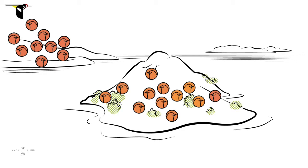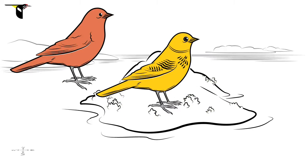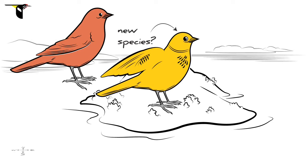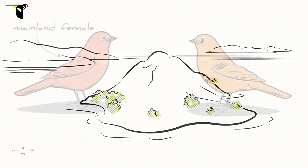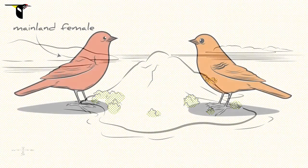Over thousands of generations, the two populations will be shaped by natural and sexual selection into separate forms, each with a unique genetic fingerprint. But at what point are we confident that this island population has really changed enough to become a new species? Well, let's put our definition to the test.